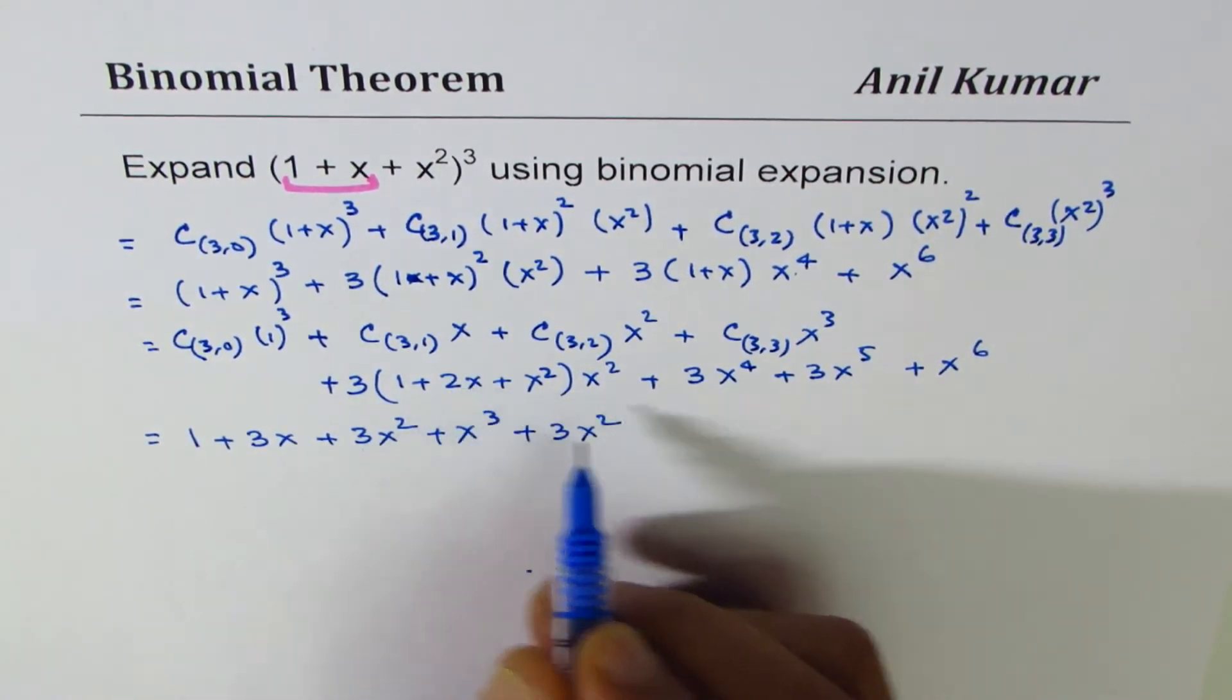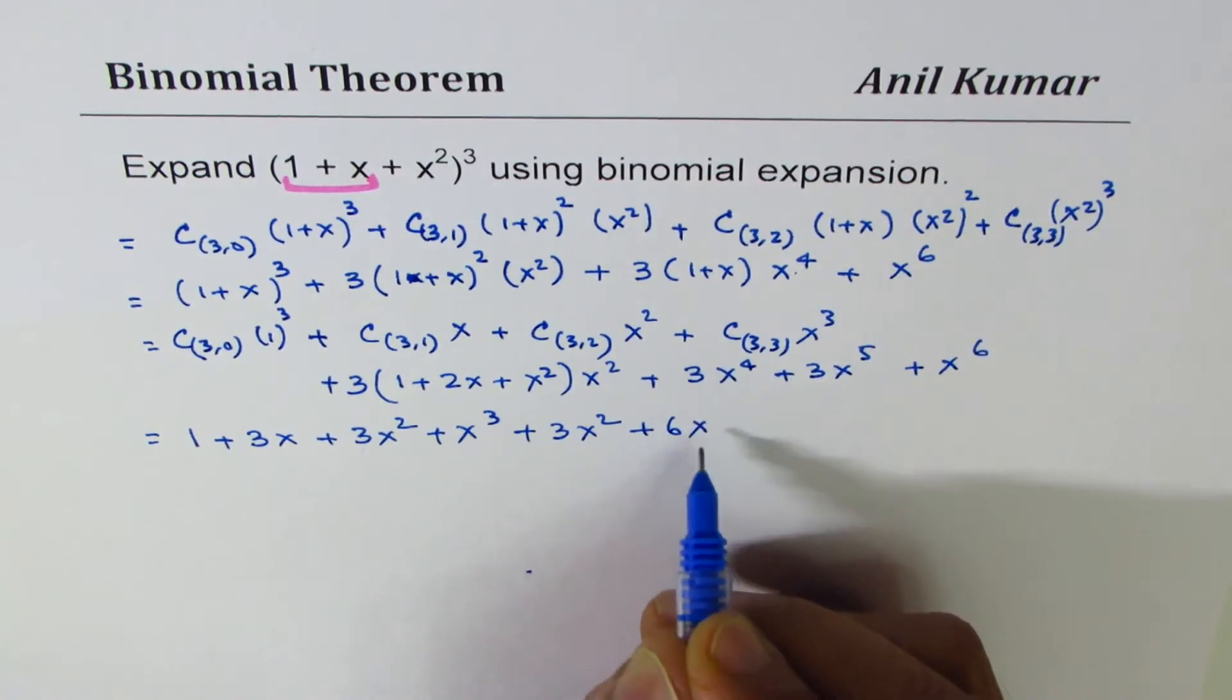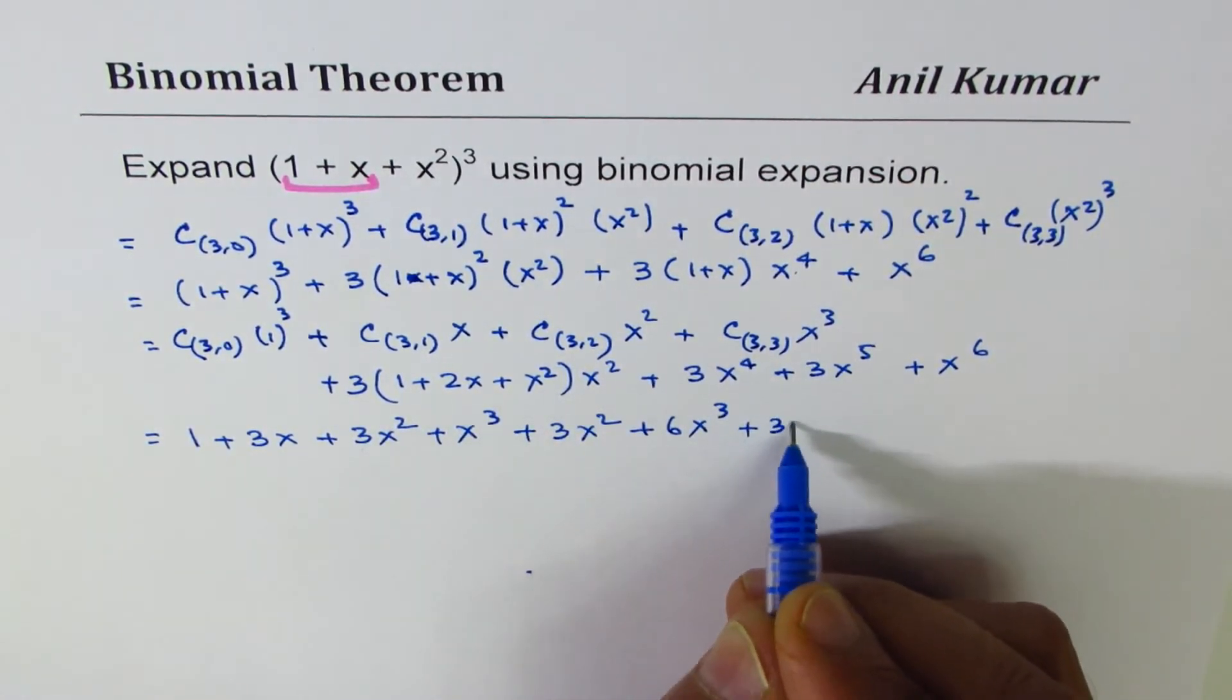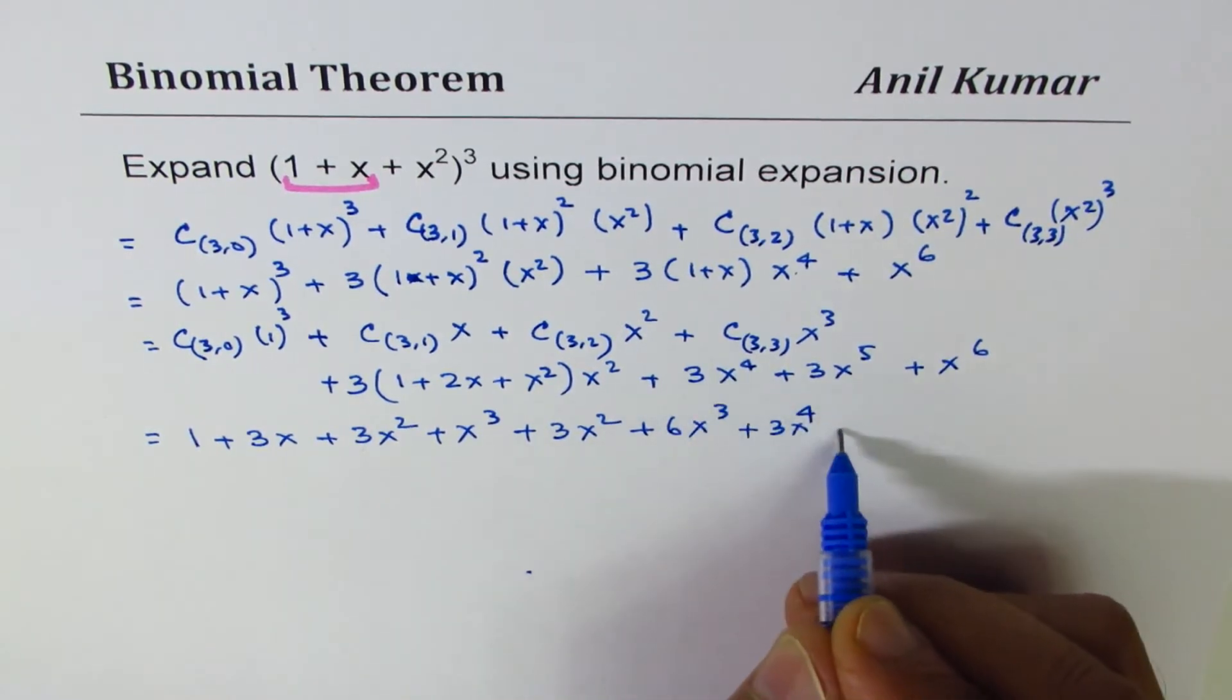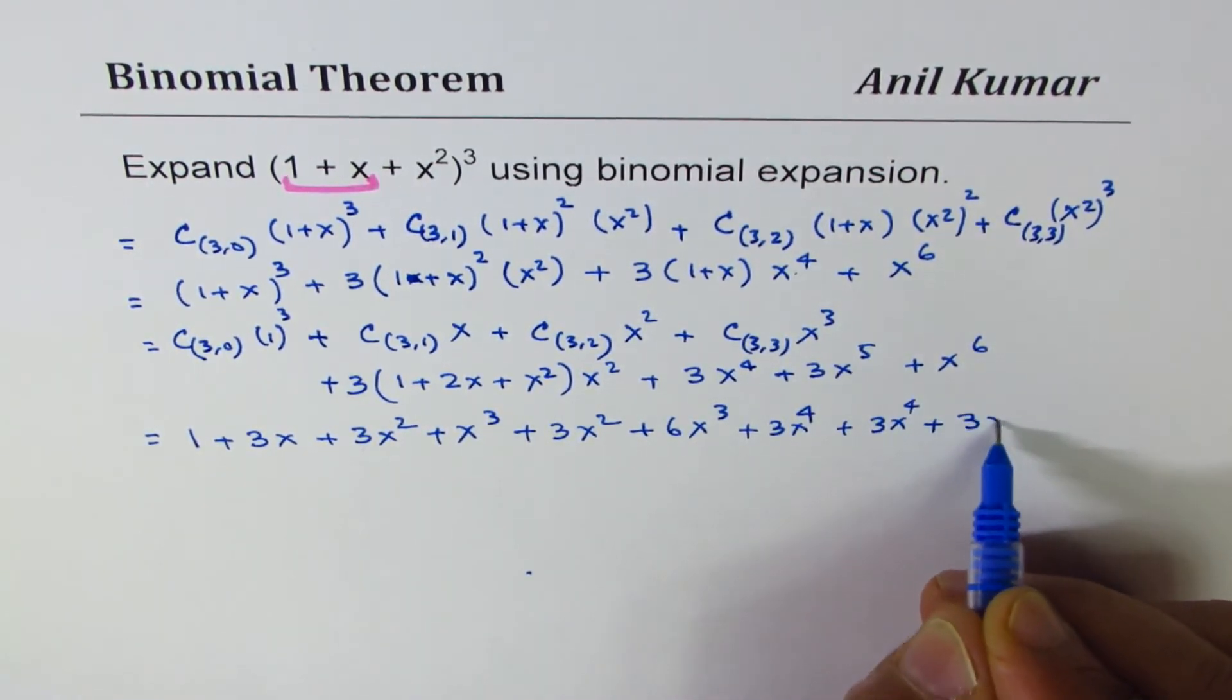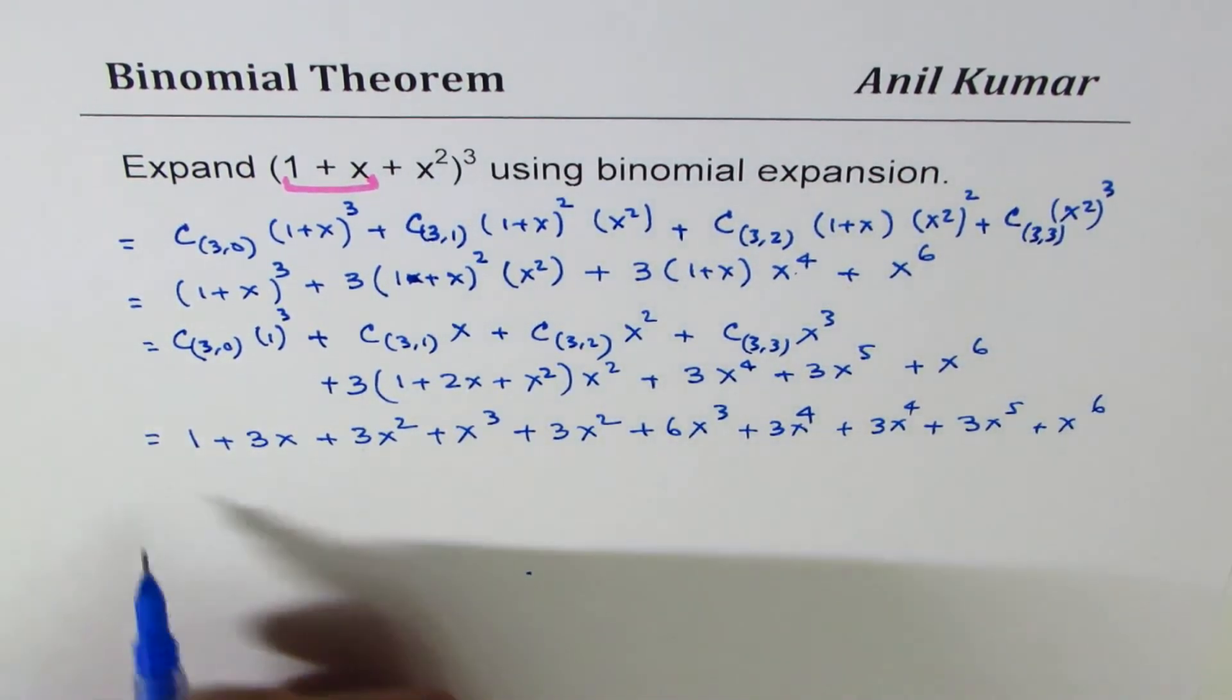3 times 2 is 6, plus 6x³, plus 3x⁴. We again have 3x⁴ plus 3x⁵ plus x⁶.